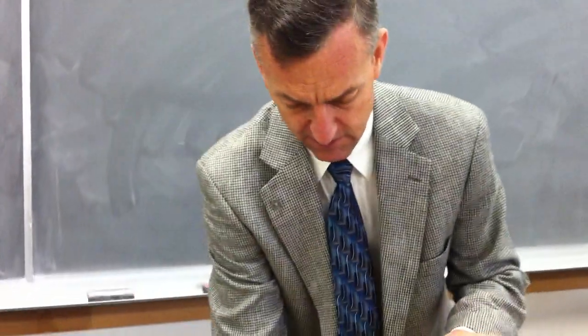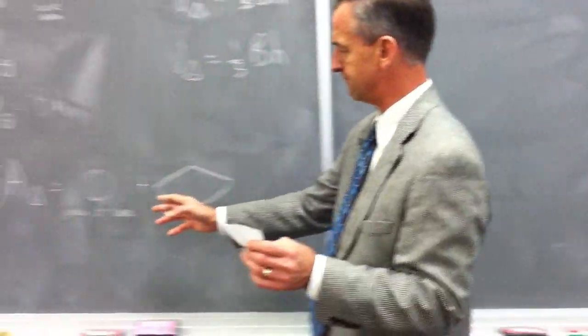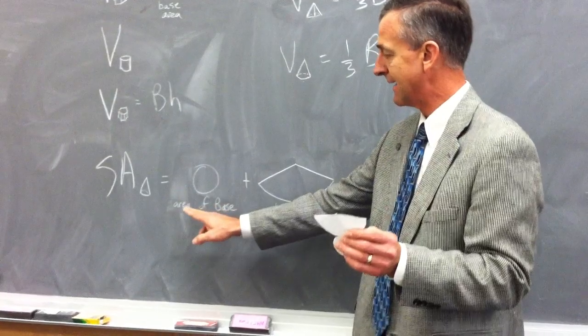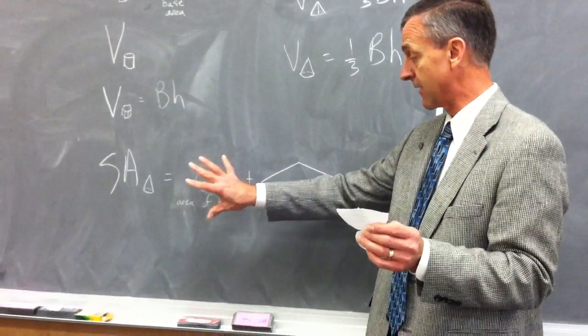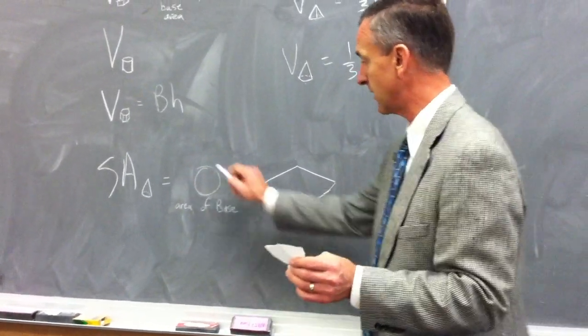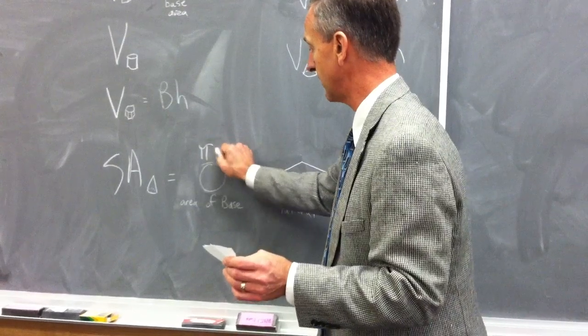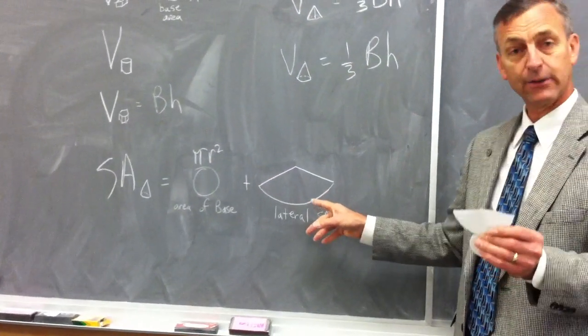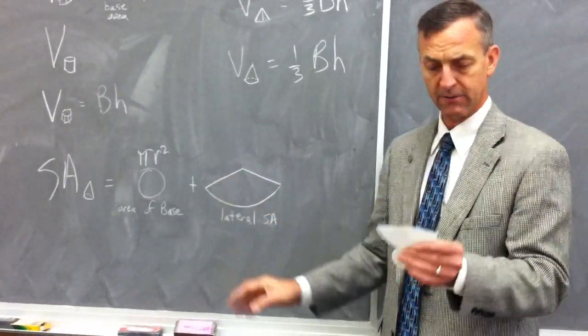So what we're going to develop is the surface area of a cone formula and we're going to find that it's the area of the base which we already know is pi r squared, and then we're going to find out how to do the lateral surface area.